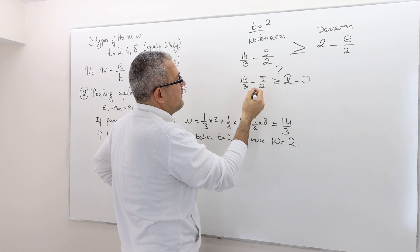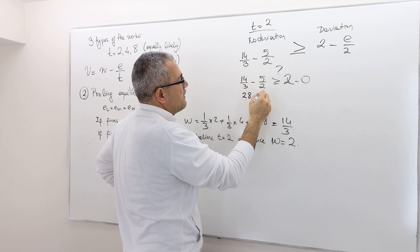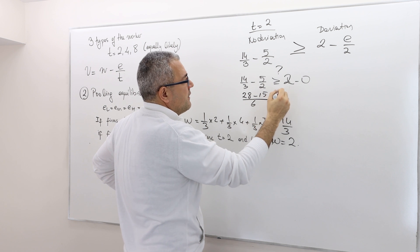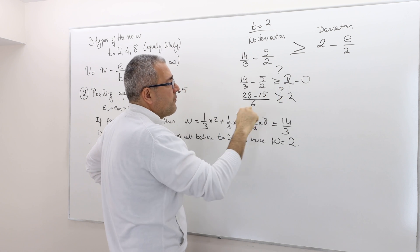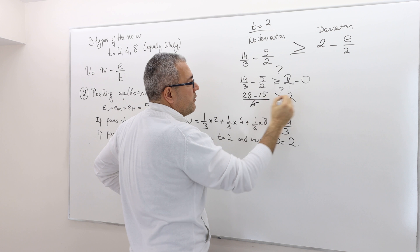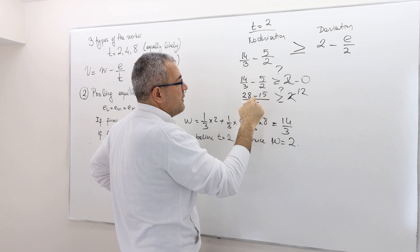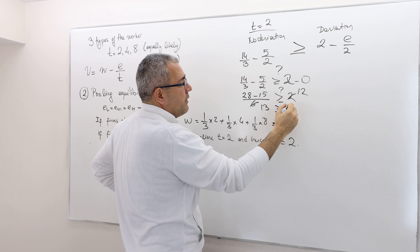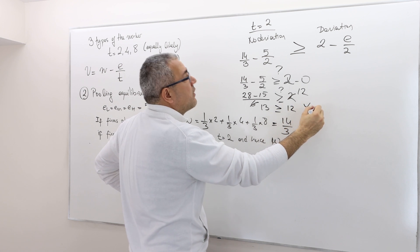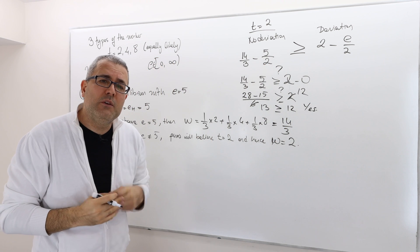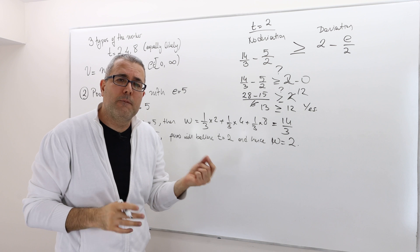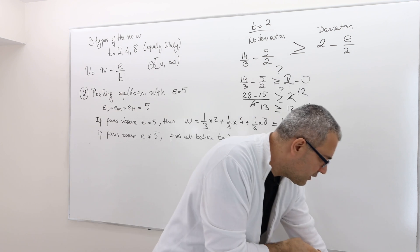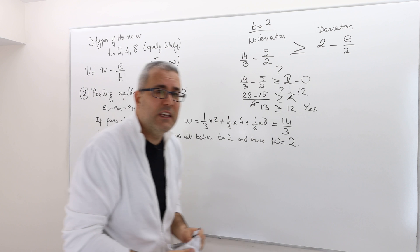This is (28 minus 15) divided by 6 — is this greater than or equal to 2? That's 13/6. Just do the cross product: this gives 13, and the right-hand side is 12. Is 13 greater than or equal to 12? Yes. So type T equals 2 is in fact best responding — choosing education 5 is the best response for type T equals 2.